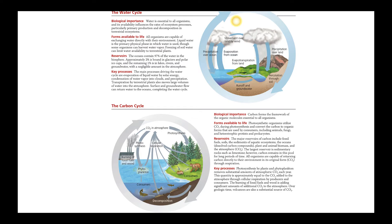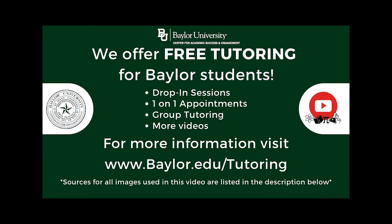Carbon can also be released in the form of carbon dioxide through cellular respiration in both plants and animals. We can also have carbon dioxide being released through the burning of fossil fuels and wood. All of that carbon dioxide goes back into the atmosphere, where it's then available to be taken up for photosynthesis again by plants or phytoplankton, and then goes through that entire cycle once again.